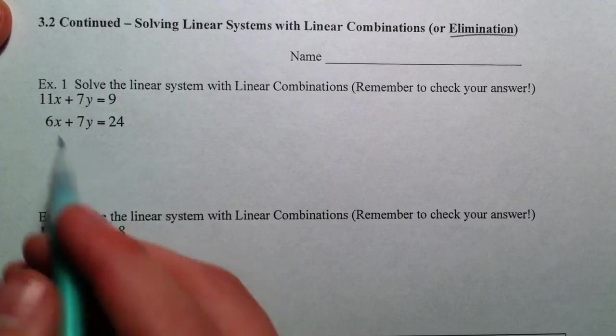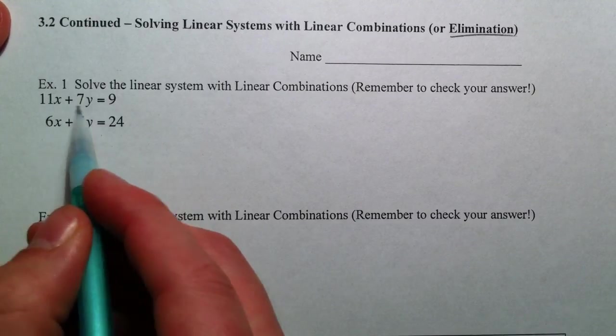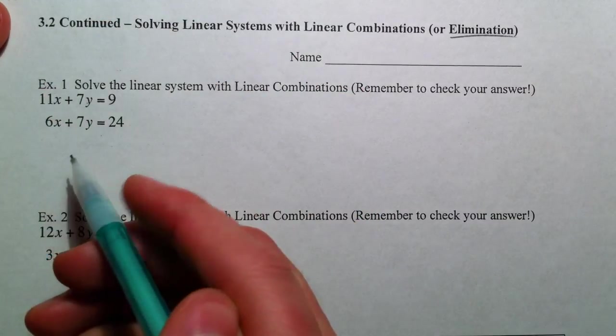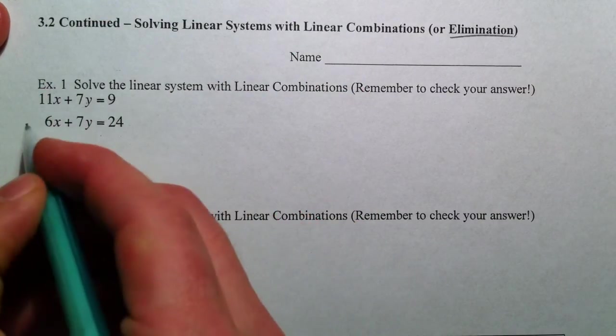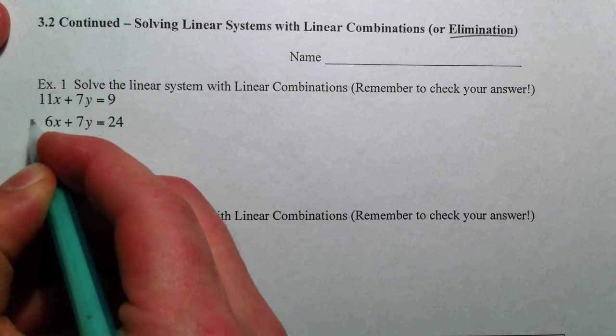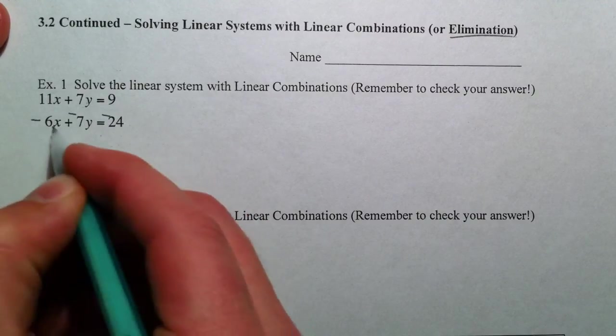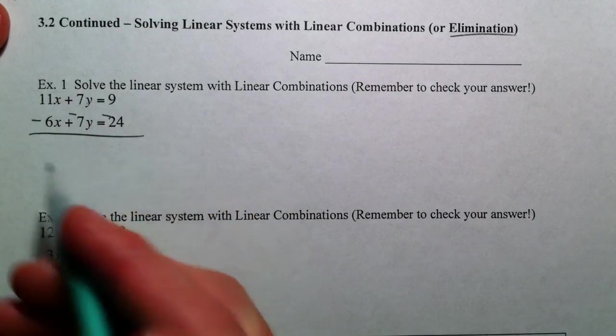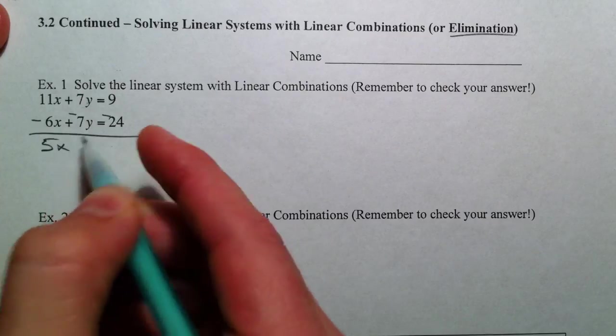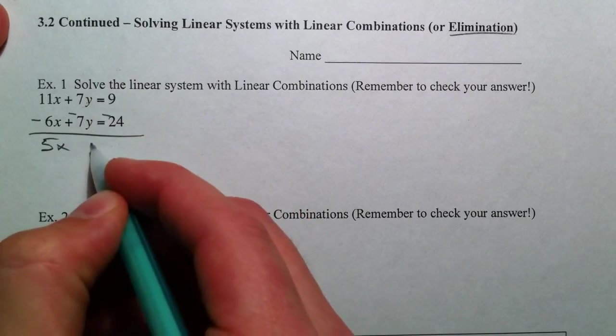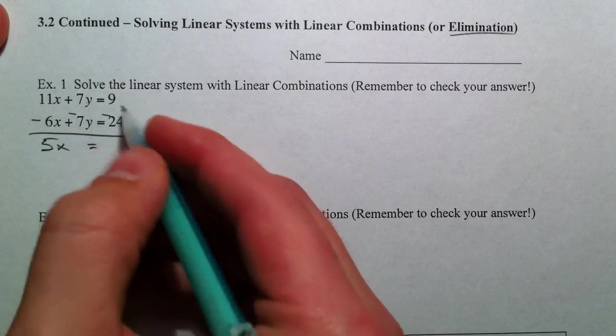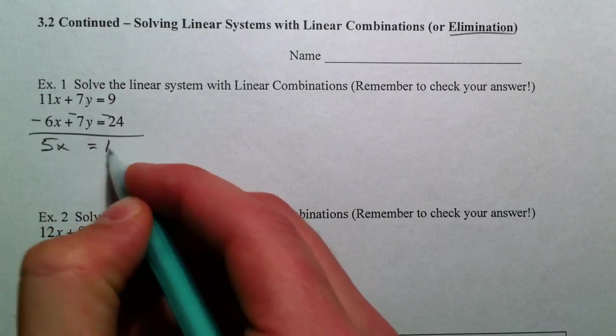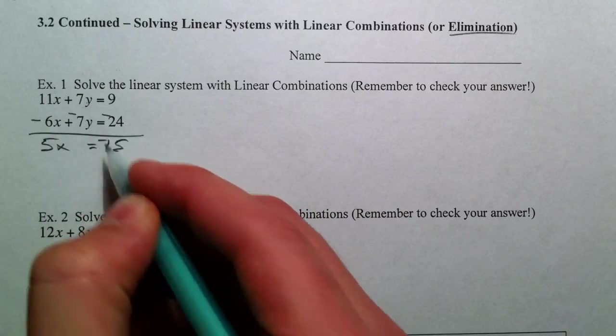One thing you can do is say, okay, well, 7y and 7y. If we subtract these two equations, the 7ys will cancel out. I always like to think of let's make them all negative, multiply through by a negative 1, because I make mistakes when I subtract a negative. So, 5x, the 7ys cancel, and so that equals 9 minus 24, which gives you 15, and a negative 15, that is.